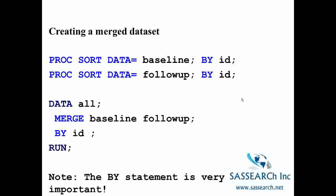Here is the typical code for creating a merged dataset. First, we sort two SAS datasets — a baseline dataset and a follow-up dataset — each by ID. Then we create a new dataset called 'all' using the MERGE statement: merging baseline and follow-up by ID. It's very important that you include the BY statement. If you leave out the BY statement, the program will run but the results will not look as expected.